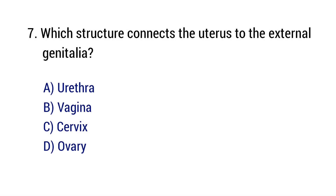Question number 7. Which structure connects the uterus to the external genitalia? The right answer is option B: Vagina.